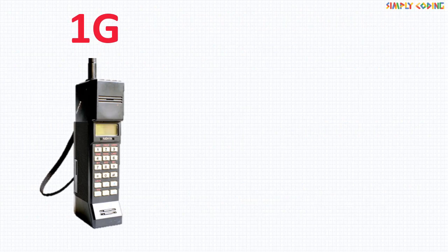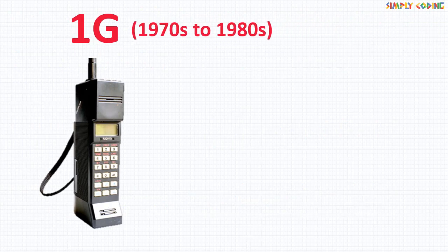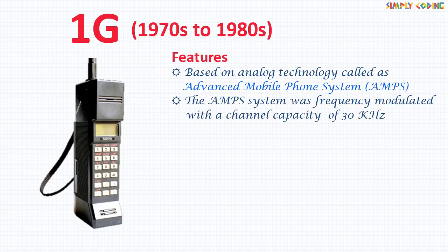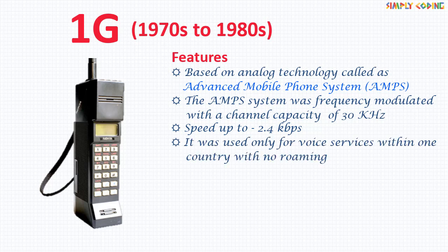The first generation introduced mobile phones between the 1970s and 1980s. It was based on analog technology called Advanced Mobile Phone System, or AMPS. The AMPS system was frequency modulated with a channel capacity of 30 kHz. Its basic features were that it had speed up to 2.4 kbps. It was used only for voice services and within one country with no roaming.